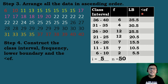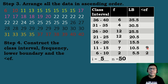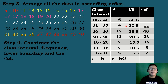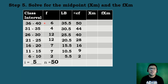For the less than cumulative frequency, we start with the frequency of the first class, which is 2. Then we add each subsequent frequency: 2 + 7 = 9, 9 + 7 = 16, 16 + 12 = 28, 28 + 12 = 40, 40 + 4 = 44, and 44 + 6 = 50.